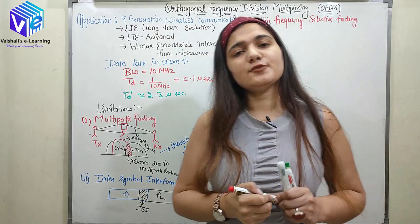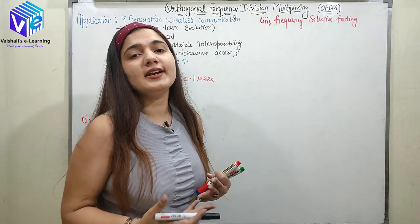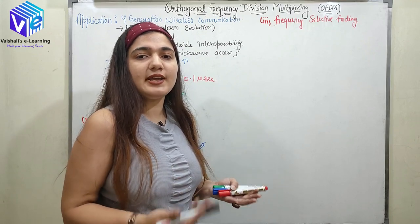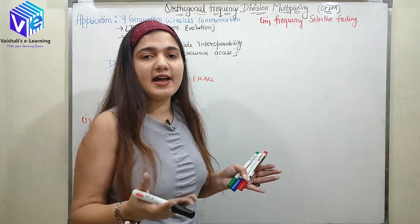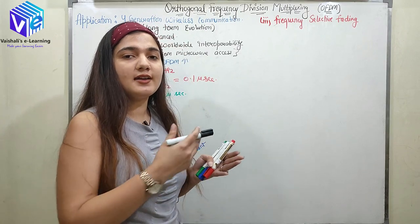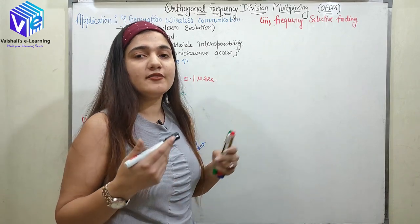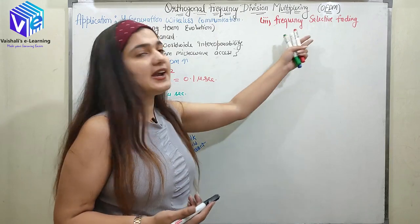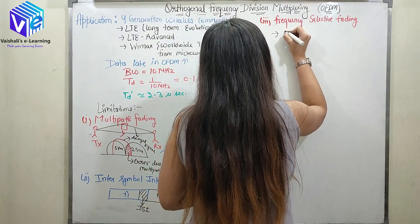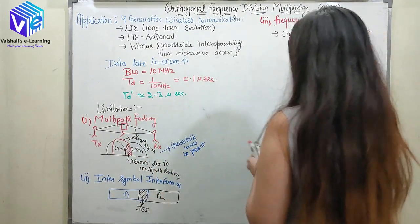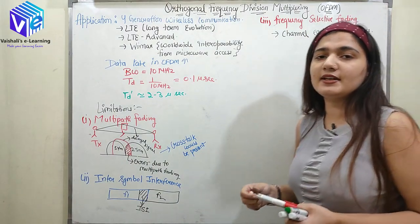The third limitation is frequency selective fading. In the channel, a lot of fading occurs because the channel is mostly air — not a dedicated channel like a wire. In a wire, errors and fading are very less, but in wireless communication fading is really high. This fading can be reduced using channel equalization techniques.